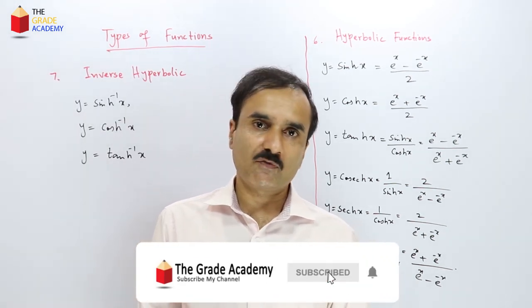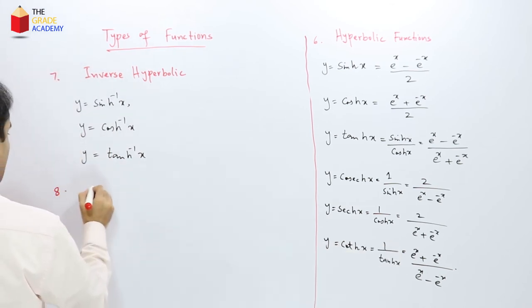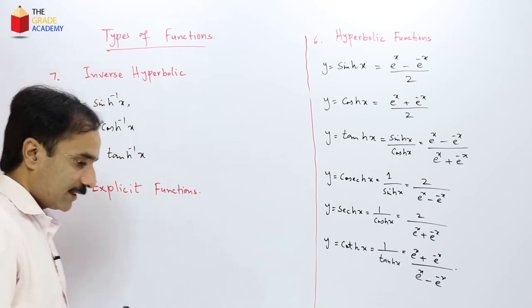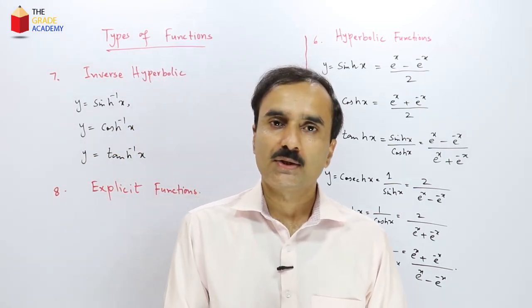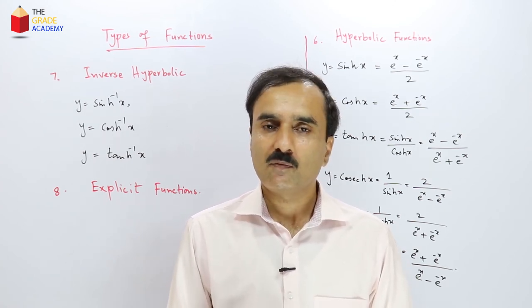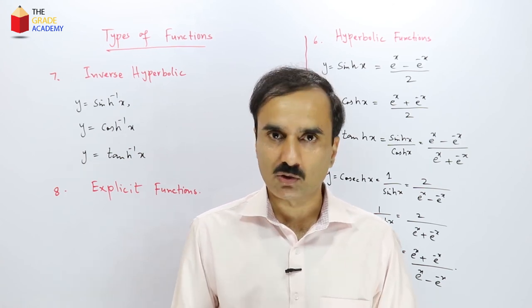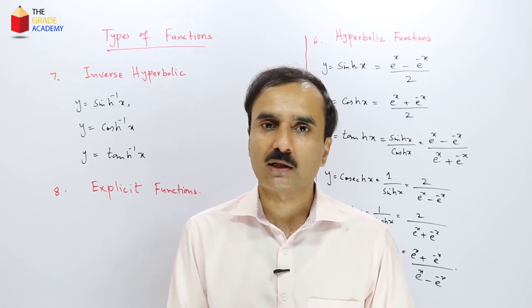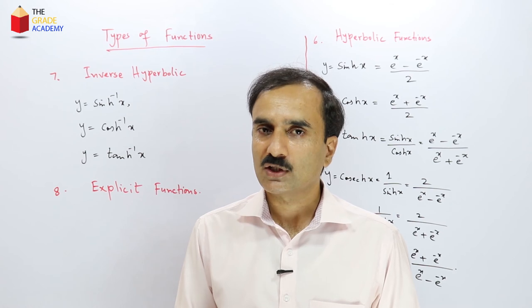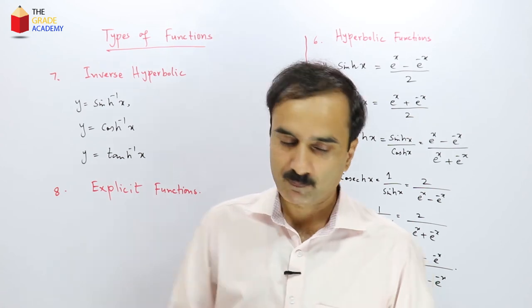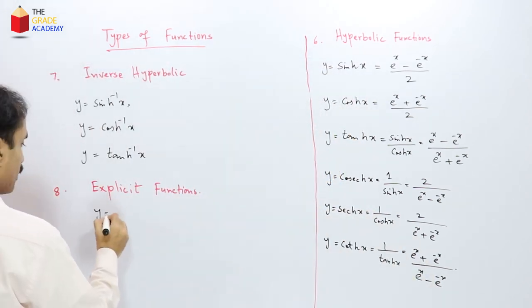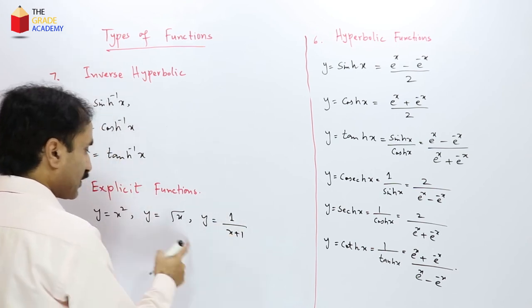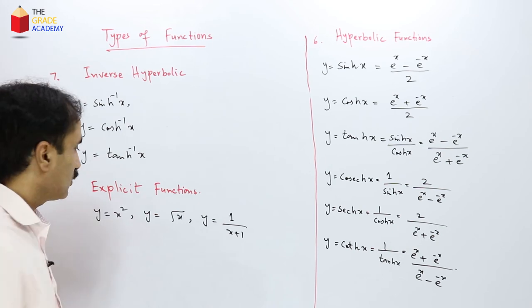The next type is explicit functions. An explicit function is one where the dependent variable y is directly expressed in terms of x — that is, y is given separately in terms of x. For example, y = x², y = √x, and y = 1/(x+1) are all explicit functions.